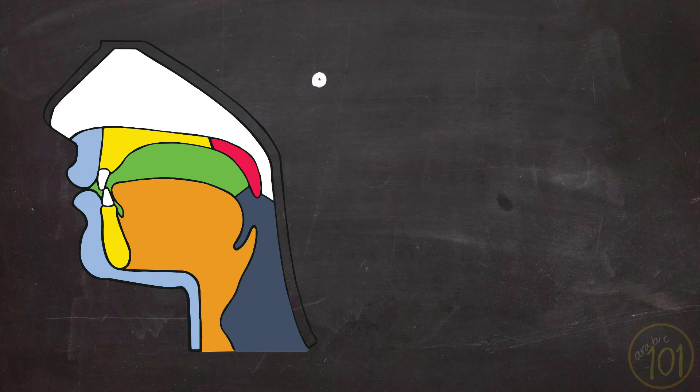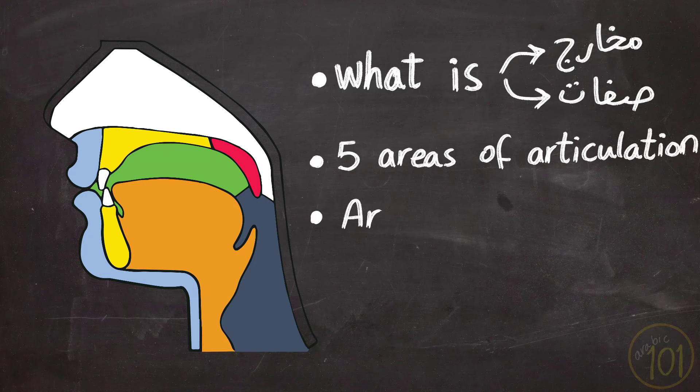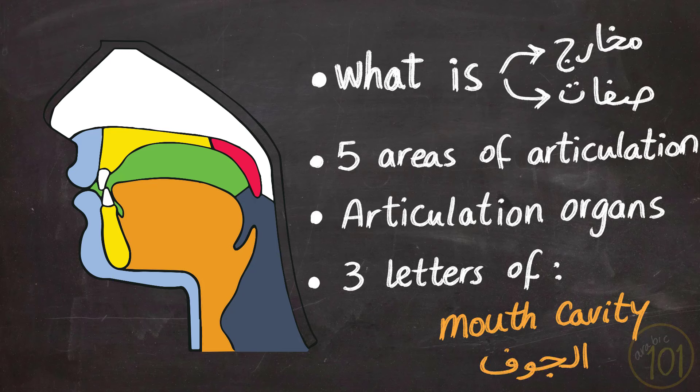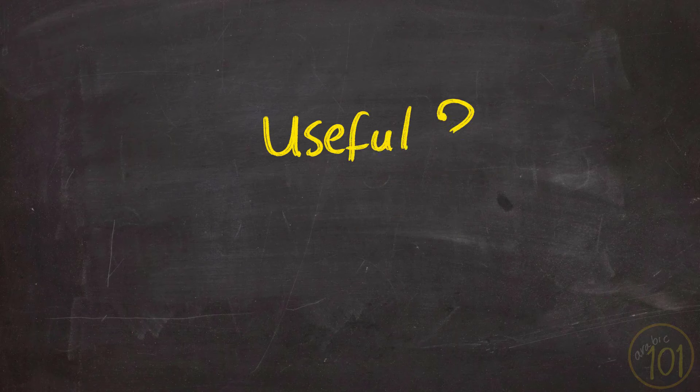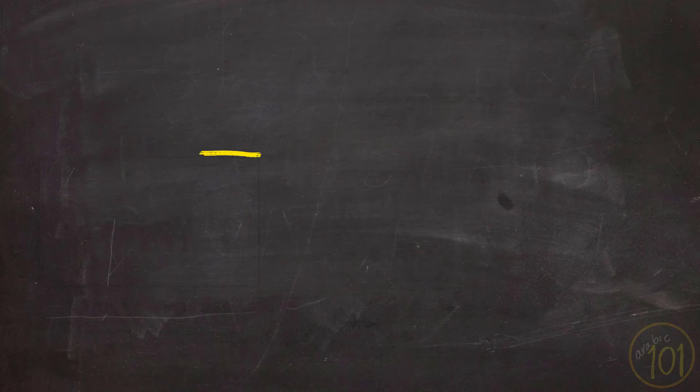So in this first lesson, we had the introduction to the concept of Makharij and Sifat. We learned the five main areas from which a sound is produced. We learned the names of some articulation organs, and we also started with learning the first three letters involving the mouth cavity or Aljouf. Let me know in the comments if you find this series useful to you or not. Your comments really help me plan my coming lessons and help as many people as possible. Thanks for watching.